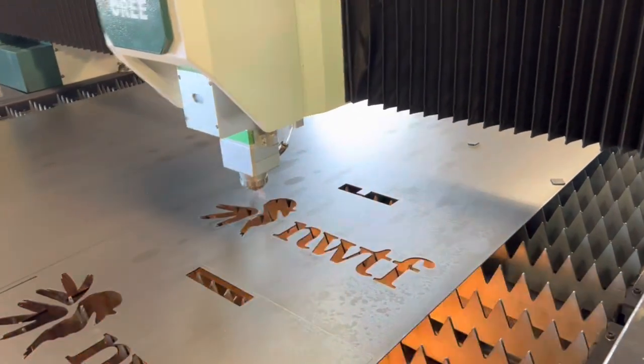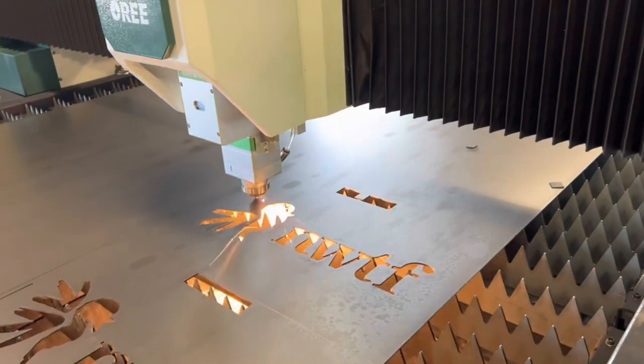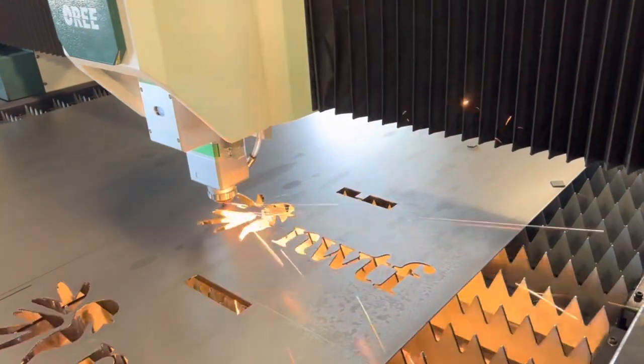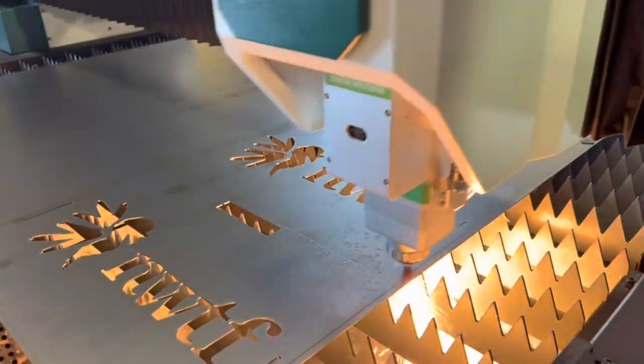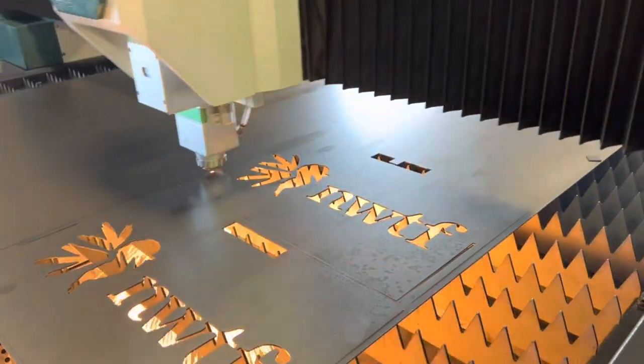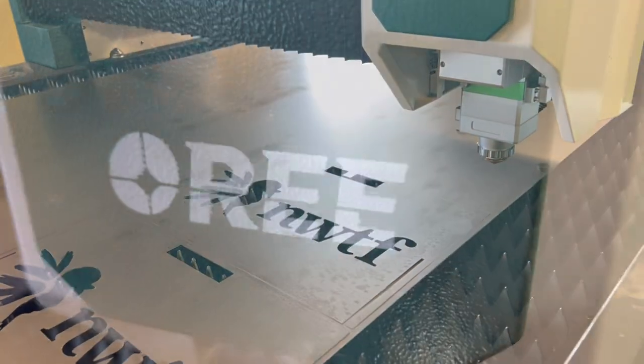So I've talked about this and shown it in the past—this process called slug destruct that you see going here, where it's cutting the grid pattern on the inside, and then the slug basically is destructed when it cuts the outside. It just falls through. It's a good thing, but it also really slows down the cycle time.